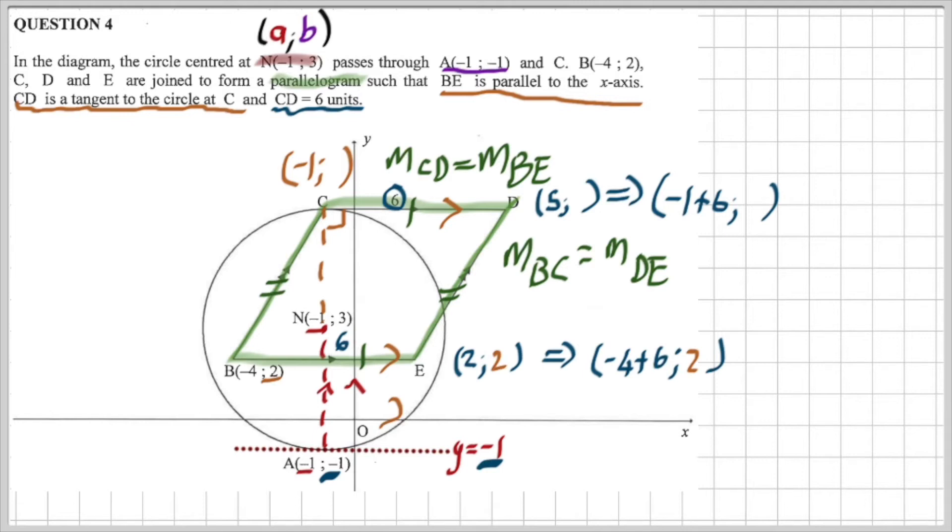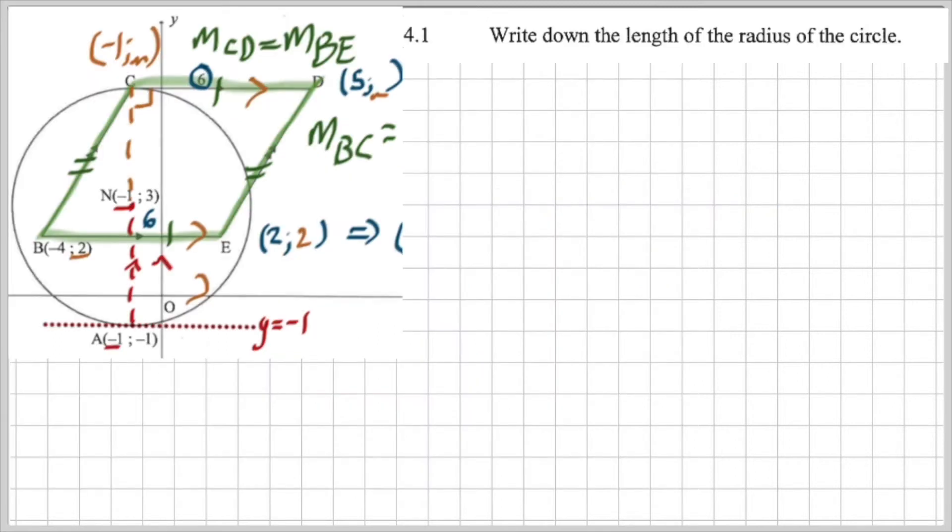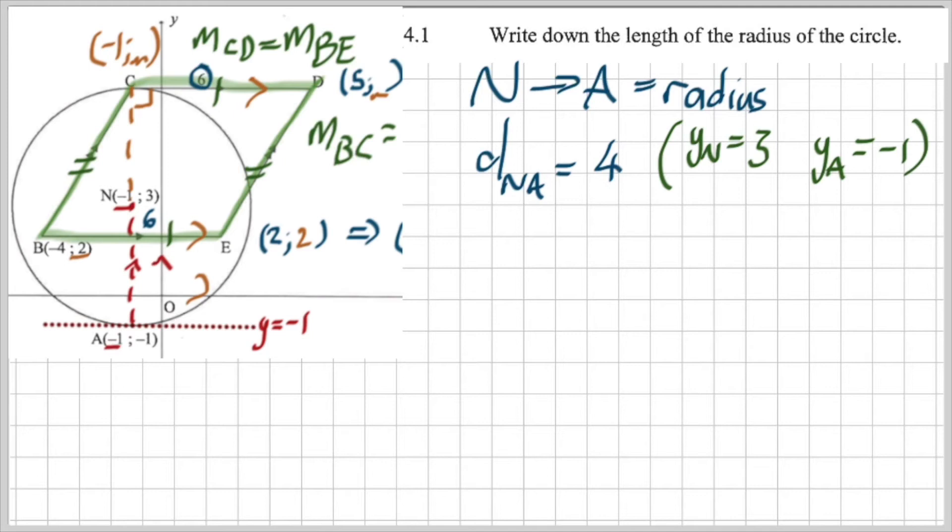If I look at the actual question, it says there, first of all, write down the length of the radius. Now the length of the radius, I'm going to look at going from N to A because they are vertically above one another. Which means the distance from N to A is four units. How did I get that so quickly? Well, remember the Y value at N is three, while the Y value at A is negative one. They're vertically above one another. So therefore, the distance is four. That's the radius.